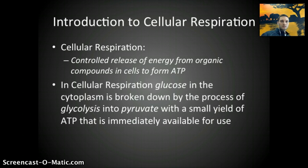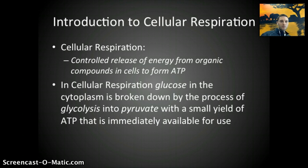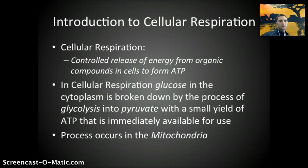In cellular respiration, the process involves the breakdown of glucose. It is broken down in the cytoplasm by a process called glycolysis, which we'll take a look at in this video, and converted to pyruvate with a small yield of ATP that is immediately available for use. Glycolysis is just the first step in making lots of ATP, and the overall process primarily occurs in the mitochondria, although glycolysis occurs in the cytoplasm.